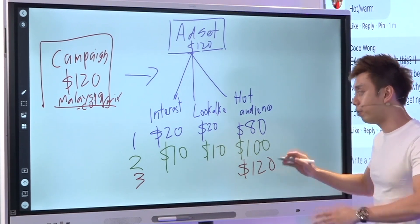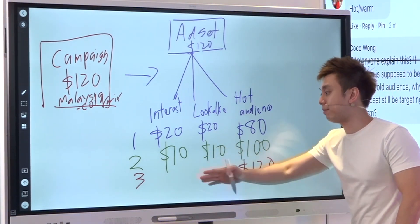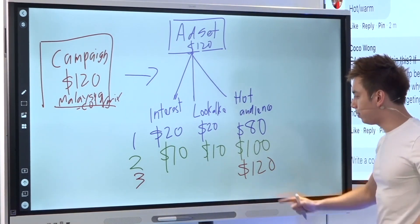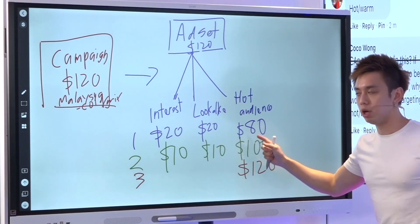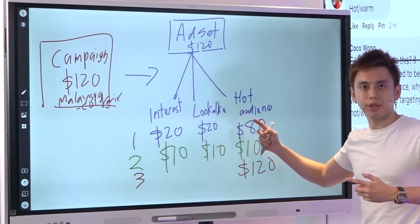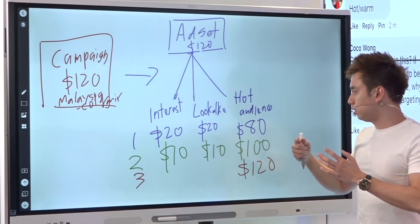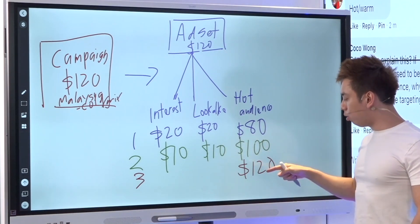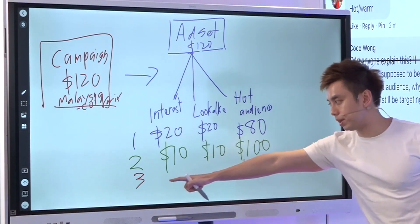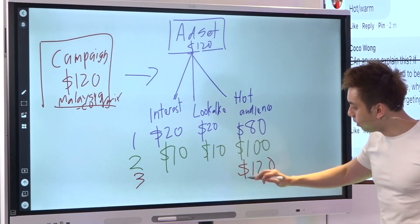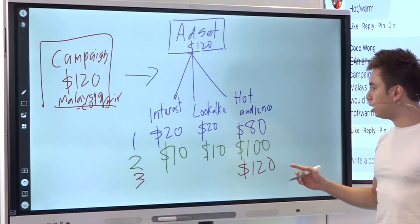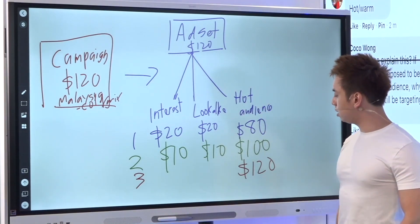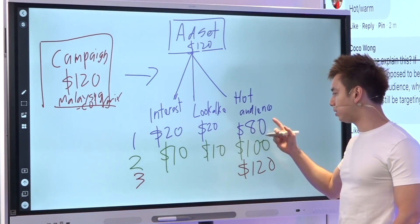This could be day three, day seven, or day fifteen — but somewhere down the road this hot audience starts to fatigue out, where Facebook is targeting the same audience seeing the same ad again and again. Eventually, whether it's day three, day seven, or day 72, Facebook is gonna see that this has fatigued out and it wasn't as effective as it used to be.